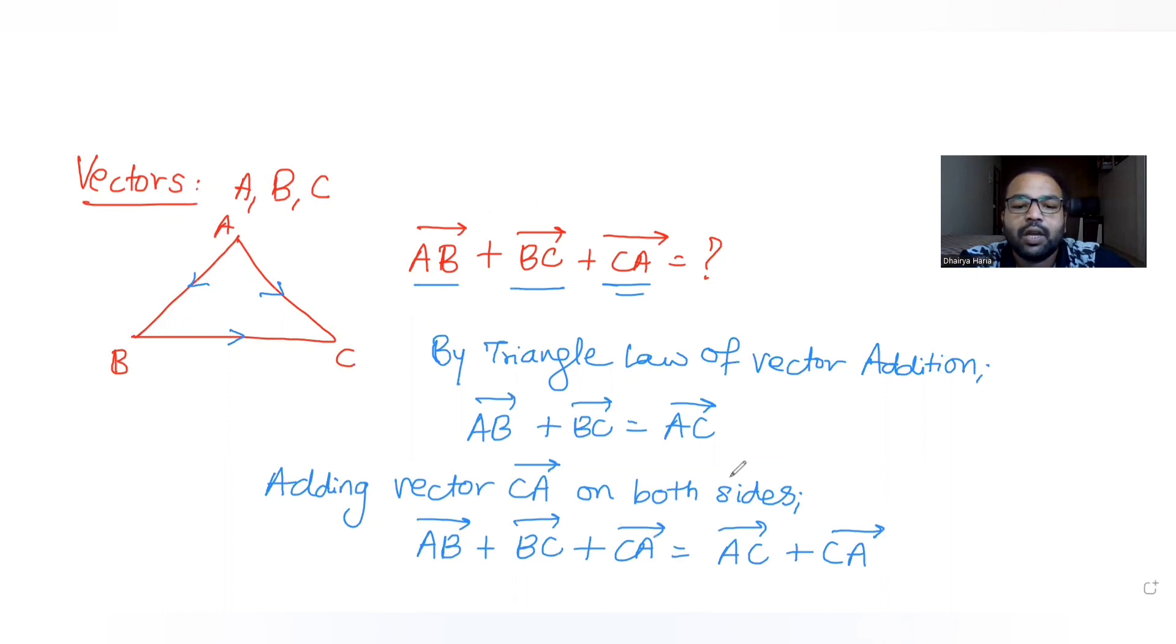If I further solve this, let's see. I know the left-hand side is AB vector plus BC vector plus CA vector, equal to vector AC plus vector CA.